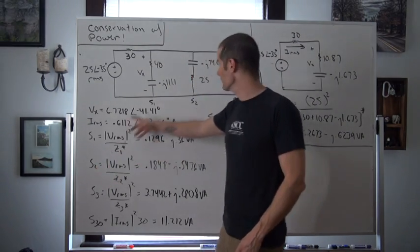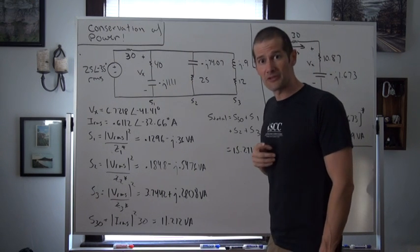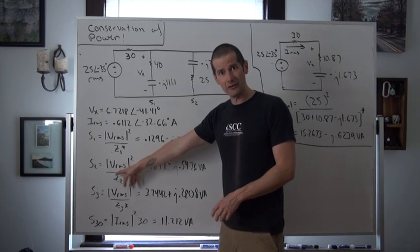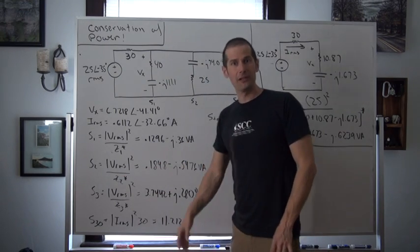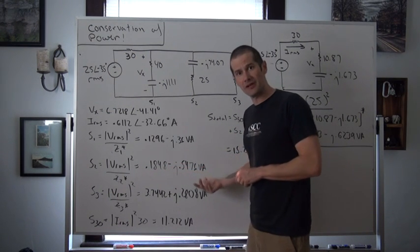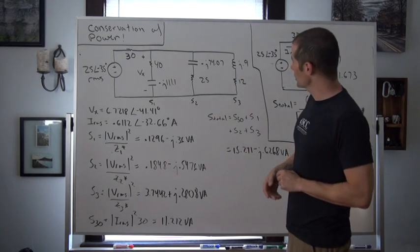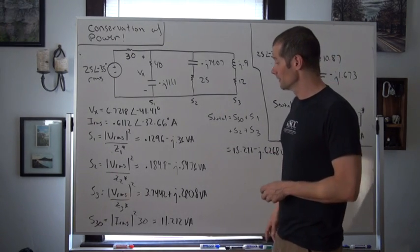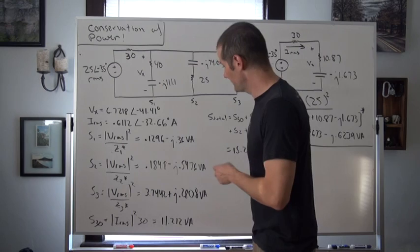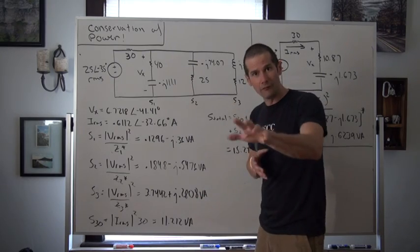For S2, the power delivered to the branch with 25 minus j74.07 ohms, we should get a negative reactive power again. Taking the same voltage, 6.72 squared, divided by that branch's conjugate impedance, we get 18.48 minus j0.5476 volt amperes. Finally, for S3 on the left-hand side, with 12 plus j9, we should get a positive reactive power. Taking VRMS squared over the conjugate of the impedance, we get 3.7442 plus j0.2808 volt amperes.